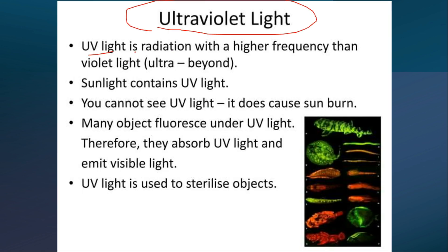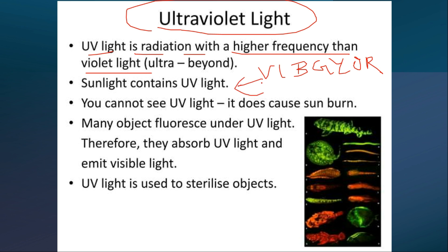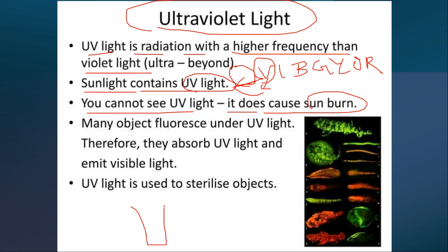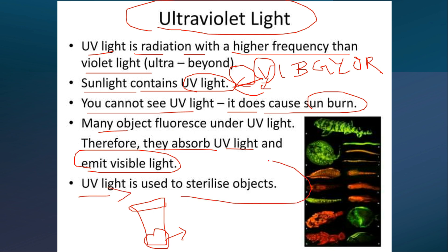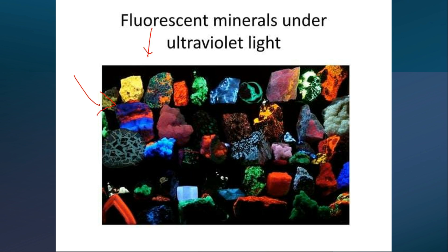Ultraviolet light has a higher frequency than violet light — it is just beyond the violet end of the visible spectrum. Sunlight contains some ultraviolet light. You cannot see ultraviolet but it causes sunburn, which is why sunscreen products are used for protection. Many objects fluoresce under ultraviolet light — they absorb UV and emit visible light. Ultraviolet is also used to sterilize objects. Fluorescent minerals appear bright under ultraviolet light.